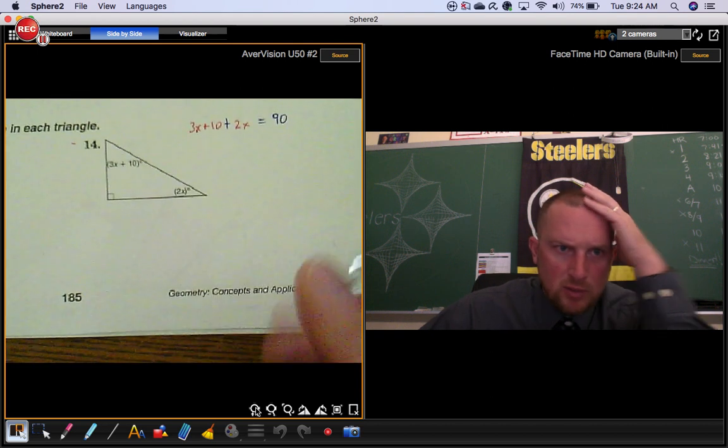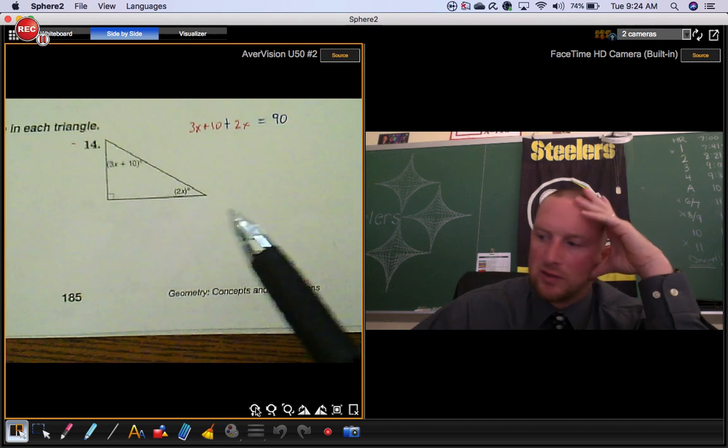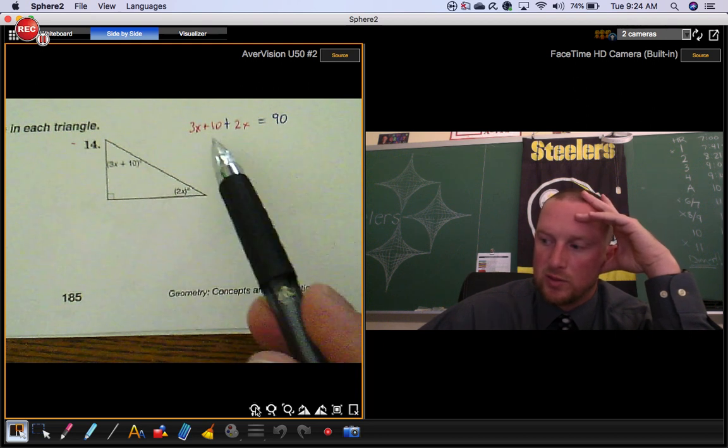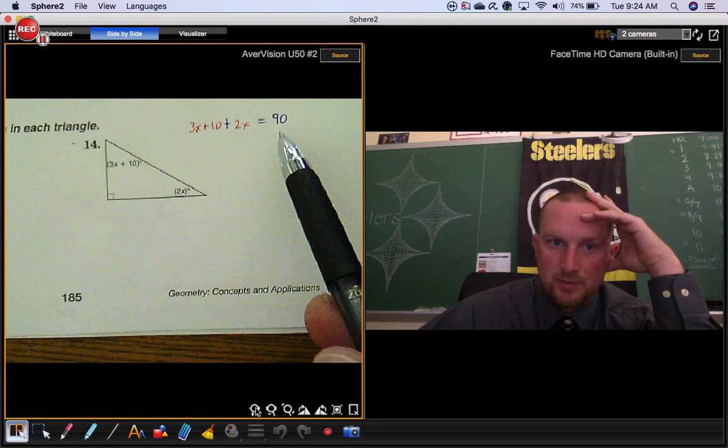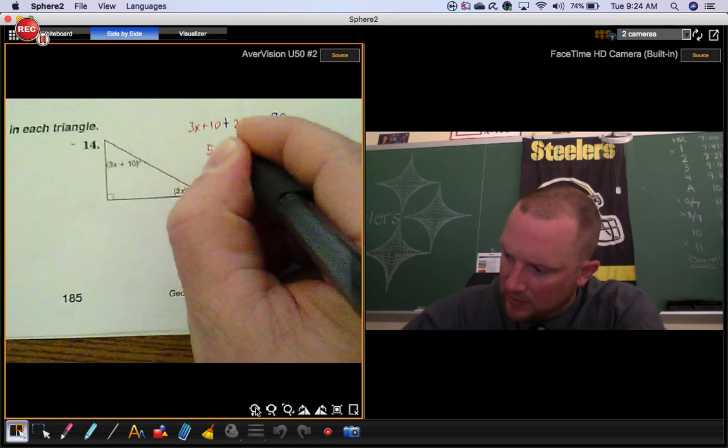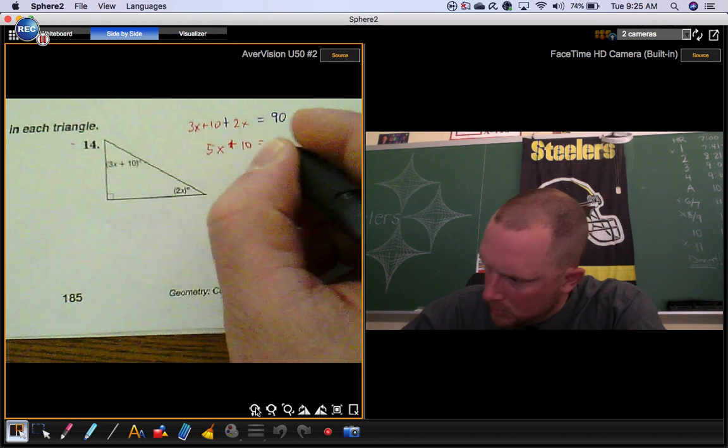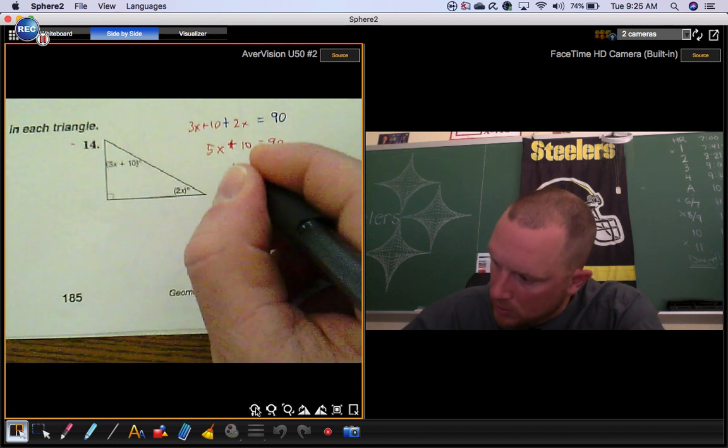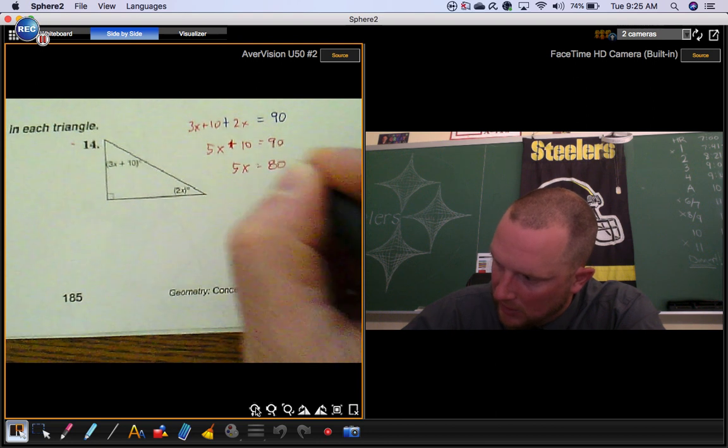We'll skip down to do number 14. Looks tricky because of the variables. You can use the shortcut. You have a right triangle. So these two acute angles must add to 90. So you got a 3x and a 2x on the same side. That's 5x. Take away 10 from both sides. So 5x equals 80. Divide by 5. x would be 16.